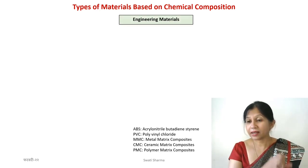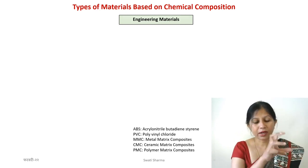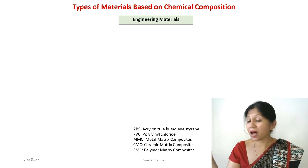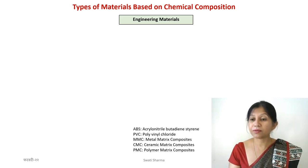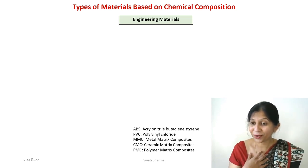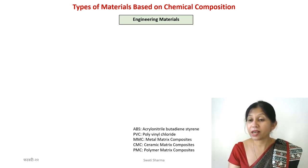This is a second type of classification of materials. Previously we talked about crystalline and amorphous structures, where we did not consider what type of material it was — whether it was amorphous metal, amorphous glass, or clay. Now we are going to classify materials based on their chemical composition, based on what they actually are.